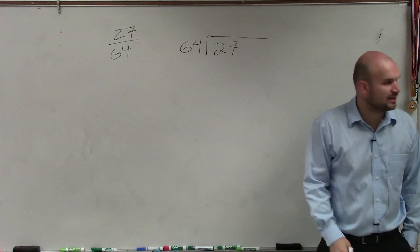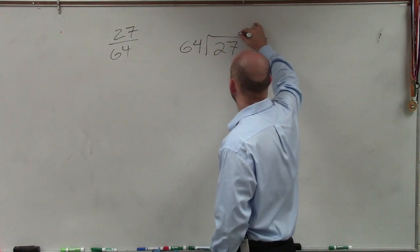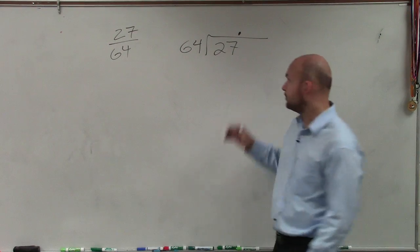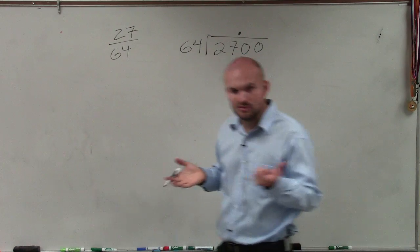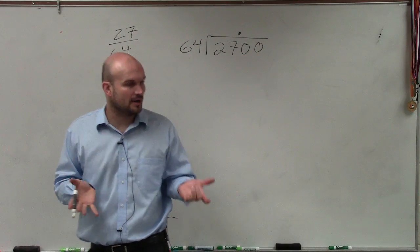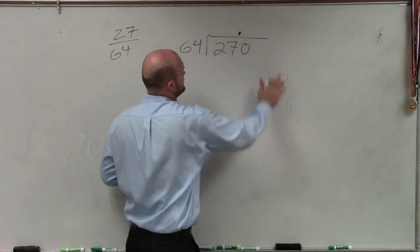64 does not go into 27, so therefore we can create our decimal point. Once we create our decimal point, we create an unlimited bank of zeros. But we only need to compute this to the hundredth. So let's just do one zero at a time.